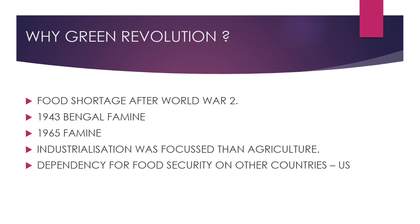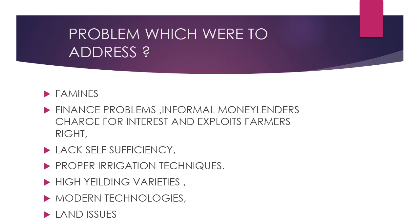Why the Green Revolution? There was food shortage after World War II, the 1943 Bengal famine, the 1965 famine, industrialization creating agriculture dependency, and food security concerns from other countries. These were the key points that necessitated the Green Revolution, championed by M.S. Swaminathan, to address the famine problem and issues with informal money lenders.